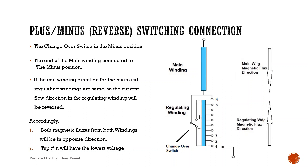But if the changeover switch is in the minus position, the end of the main winding is connected to the minus position. If the coil winding direction for the main and regulating windings are the same, the current flow direction in the regulating winding will be reversed. Accordingly, both magnetic fluxes from both windings will be in opposite directions. In this case, tap number N will have the lowest voltage.